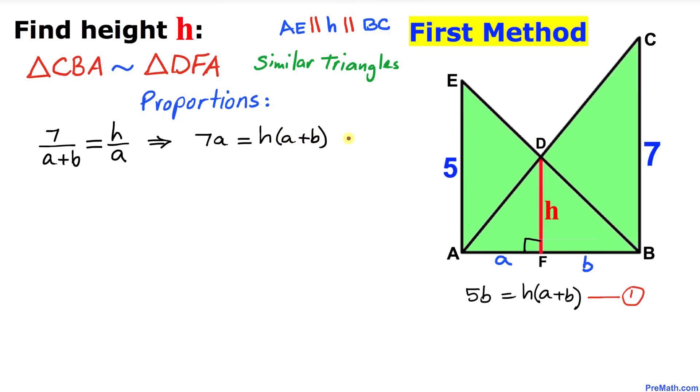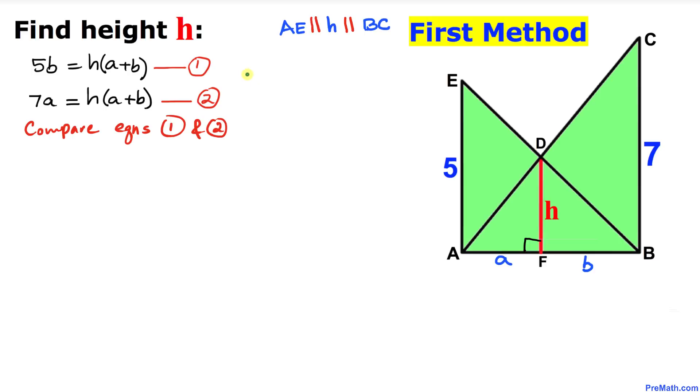Let's call this equation number 2. And here's our next step: compare equations 1 and 2. We can see the right hand side is same, so we can equate the left hand side as well. Therefore, we can write 7A equals 5B.